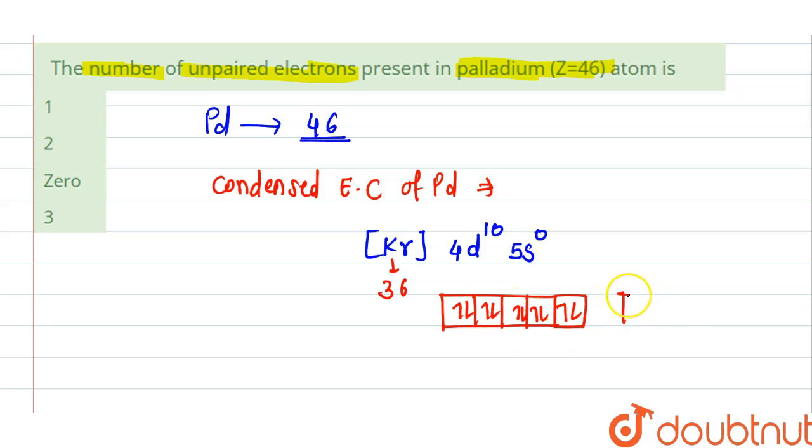And in s subshell there are 0 electrons present. So the number of unpaired electrons present in palladium is... there are no unpaired electrons, no unpaired electrons present in palladium.